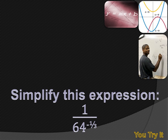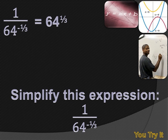Try simplifying 1 over 64 to the minus one-third power. Hit your pause button, try the problem, and then hit your forward key to move on to my answer. The minus one-third power means we take the reciprocal: 1 over 64 to the minus one-third becomes 64 to the positive one-third. That one-third exponent means we want the cube root of 64, and the cube root of 64 is 4. So the simplification results in an answer of 4.